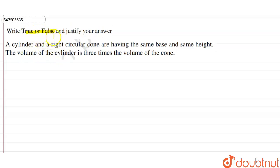A cylinder and a right circular cone are having same base and same height. The volume of the cylinder is three times the volume of the cone. Right, so in the question it is given that the base, means radius or diameter, are equal.